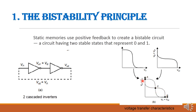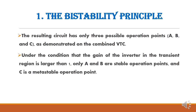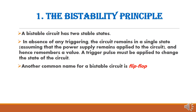From the voltage transfer characteristics, there are three operating points: A, B, and C. Among these, A and B are stable and C is metastable. At the C operating point, the inverter characteristic curve in the transient region has a gain larger than 1, which causes it to be in a metastable state. So there are only two stable states, A and B. The bistable circuit has two stable states — 1 and 0. The common example of a bistable circuit is a flip-flop, which is a single bit storage element that can store either 0 or 1.